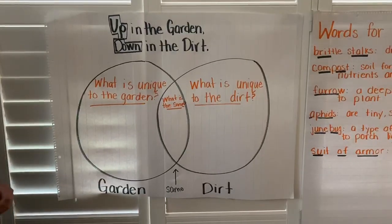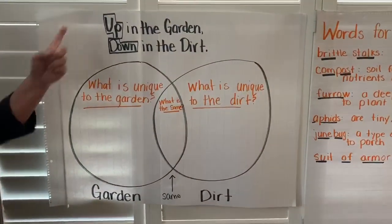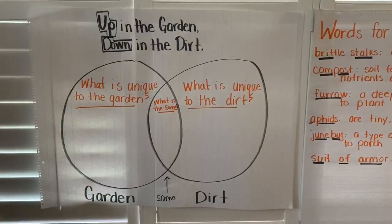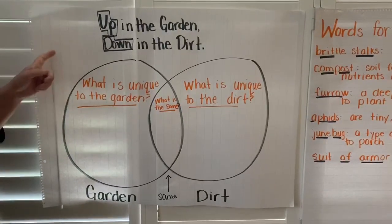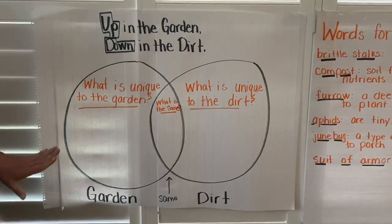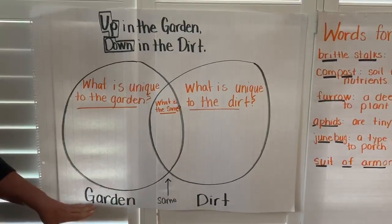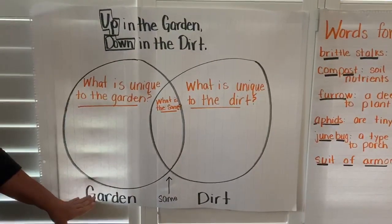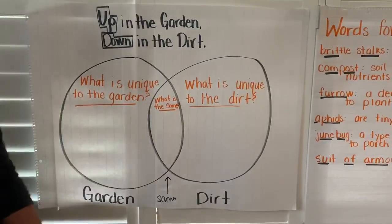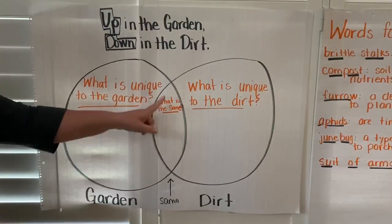Good morning again. As you've listened to Up in the Garden and Down in the Dirt, see if you can complete this Venn Diagram with your parents. A Venn Diagram compares the two different things that happen within the text. One is about what happens in the garden, the other is what happens in the dirt, and then in the middle, what is the same.